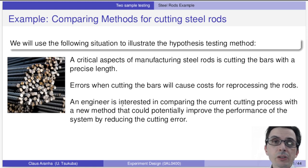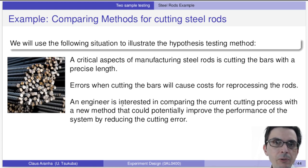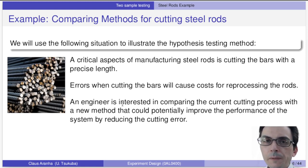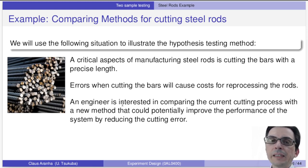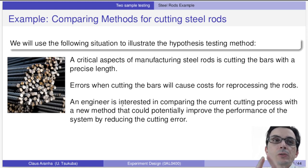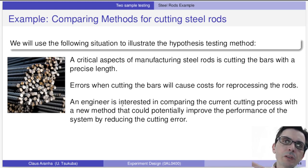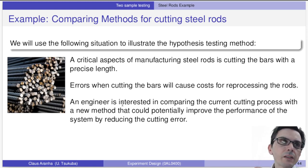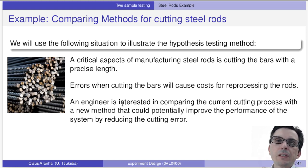One thing that is very important to observe about this experiment is what is the variable of interest. You need to be very careful because usually we go to the first thing that comes to mind. Maybe some of you think what we want to compare here is the size of the bar, but that's not quite correct. What we are interested in is to minimize the variation of the bar. We might think we want to calculate the variance, but we can do something a little bit better — we can try to estimate the mean of the error. So we take the error of the production and we want to estimate the mean of this error.